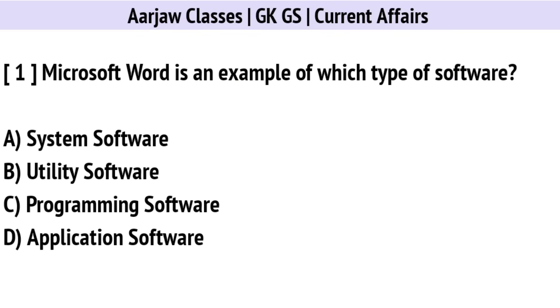Microsoft Word is an example of which type of software? The correct option is D: Application Software.